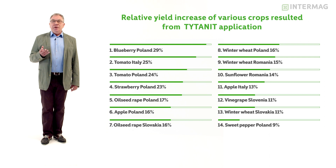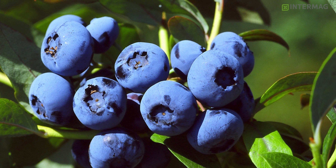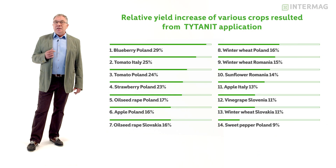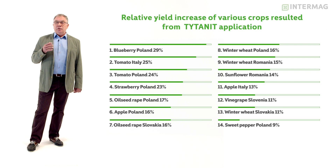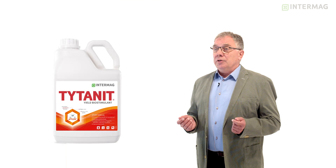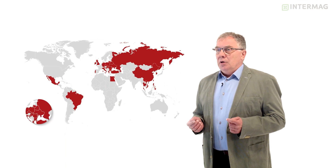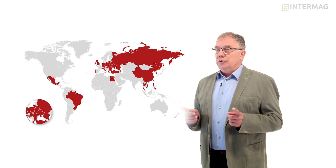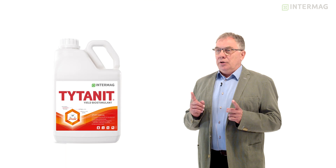We managed to increase the yield of crops — for example, in the case of blueberry, almost by 30 percent. You can see how efficient Titanite is regardless of crop and regardless of location. It is a universal product which can be used for any kind of crop in any country. Titanite is well known all over the world — it is used on more than one million hectares on farms in different countries. So if you are looking for a tool to increase yield quality and quantity, Titanite is a good choice. It's a way to high yield.